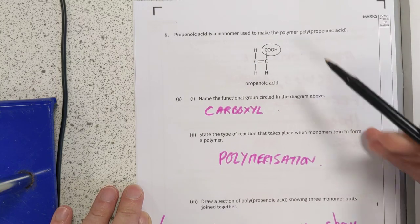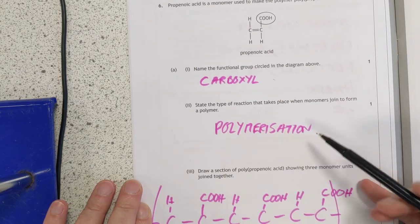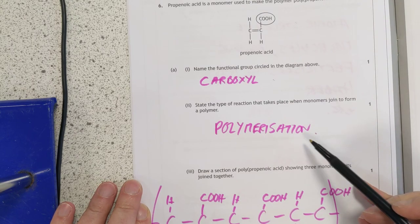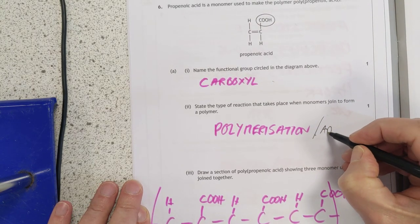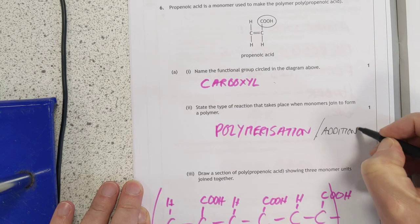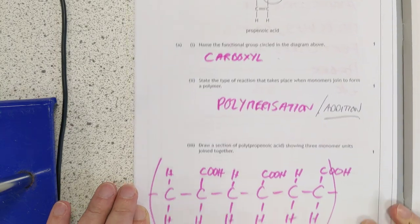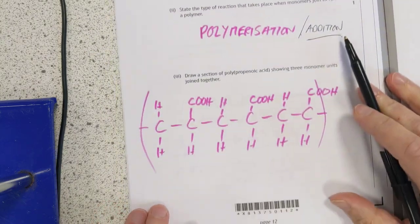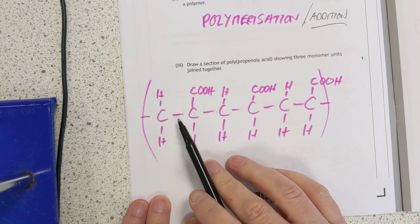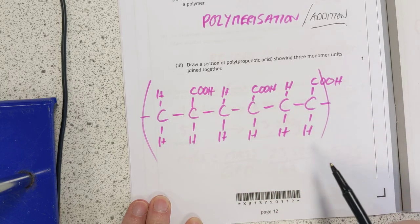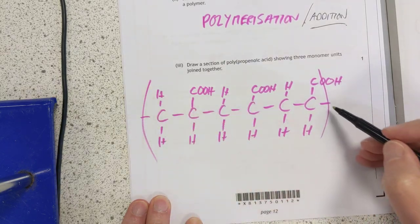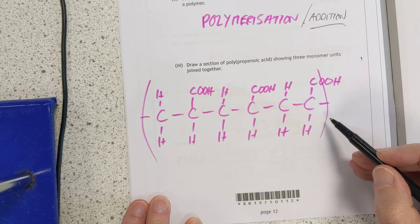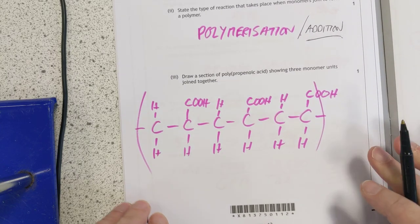That is the carboxyl group there. When they join, it's polymerization. Would they take addition? I don't know. So, again, the disadvantage of me not being the SQA. Draw a section of when you join three of these together. So, you just pop three side by side. You break open the double bond, link them all up. I've put brackets and bonds to the side just to ensure the marker knows that it's a polymer. But that's probably overkill.